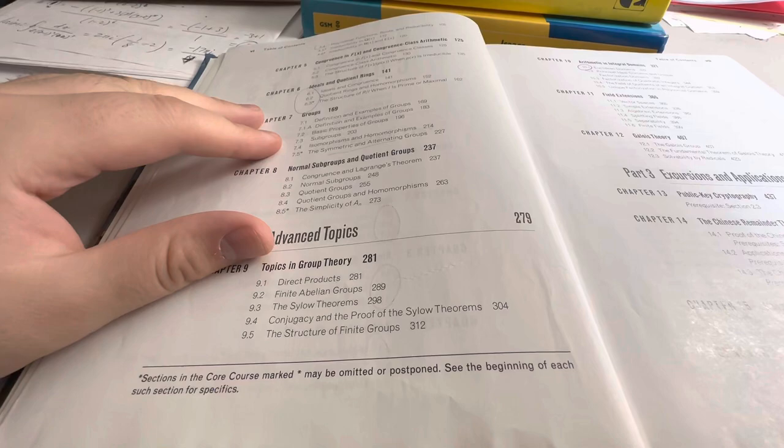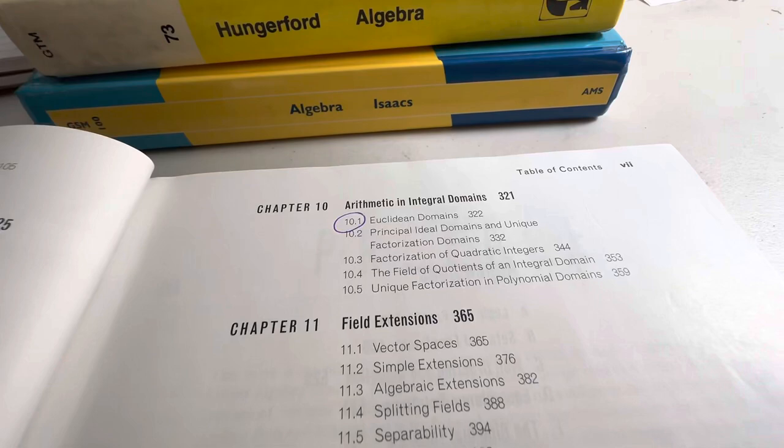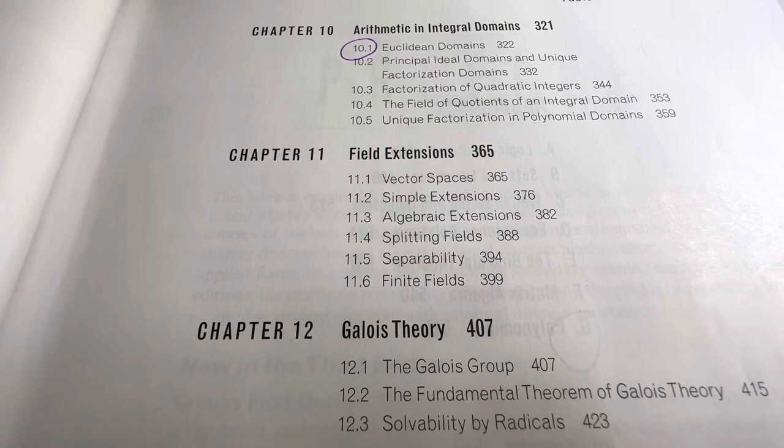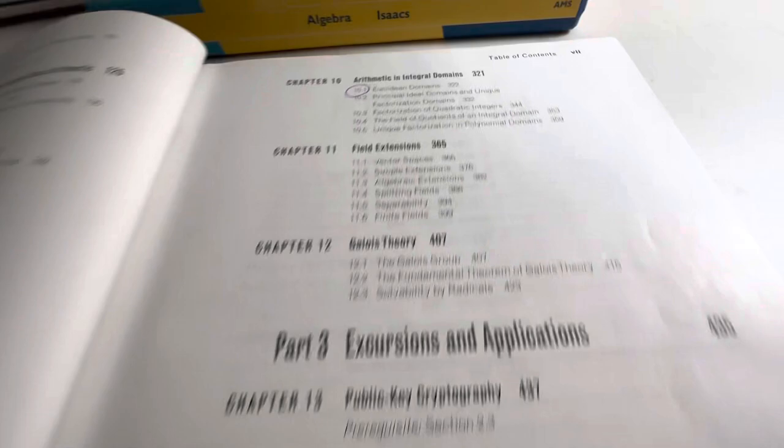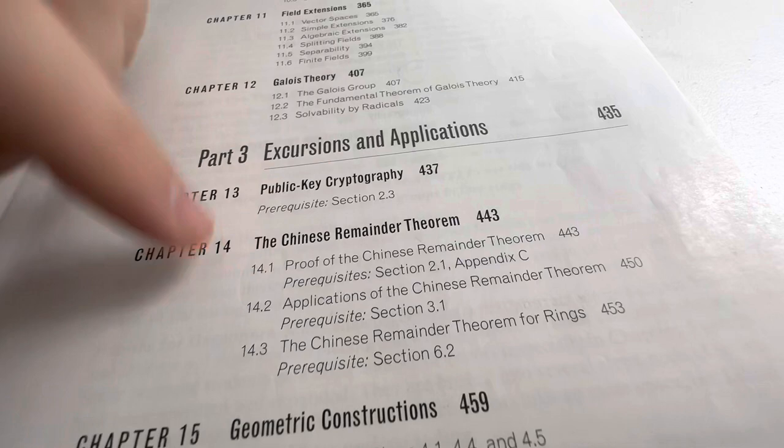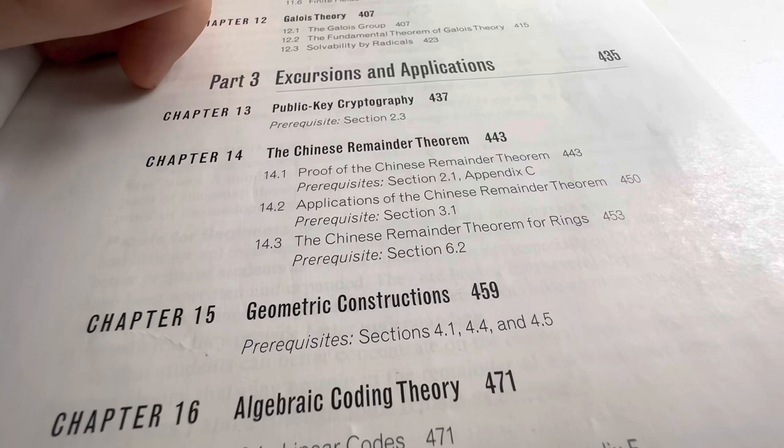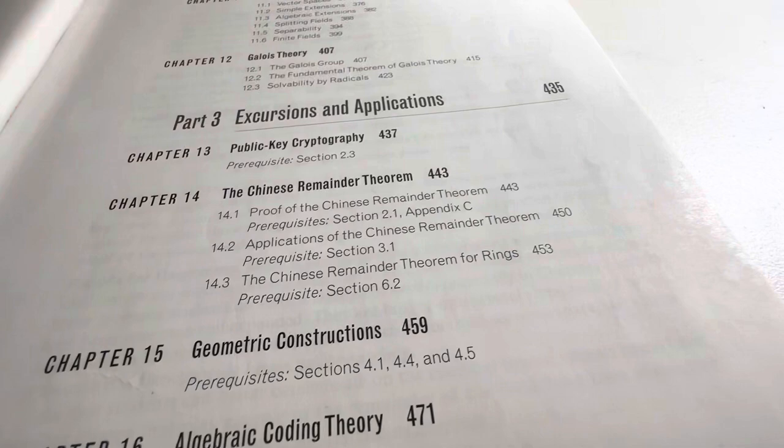In advanced topics, I think we covered Sylow theorems? Maybe not. I'm not sure. Arithmetic and integral domains. I think we did that. I think we did field extensions. We skipped Galois theory. It's hard for me to remember. It was a while ago. And I do think we did the Chinese remainder theorem. And then these other subjects here I think we skipped because they don't look familiar. Excursions and applications. Public key cryptography.